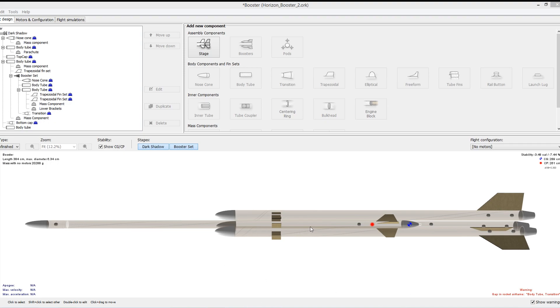Now we've also included the point masses for where the water will be during launch. Here it is in the sustainer and here it is in the booster. And here we can see that the center of pressure is ahead of the center of gravity.